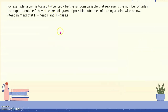For example, a coin is tossed twice. Let X be the random variable that represents the number of tails in the experiment. Now let's have the tree diagram of possible outcomes of tossing a coin twice. Keep in mind that H is heads and T is tails.